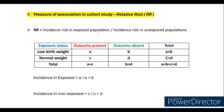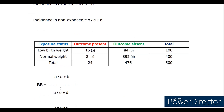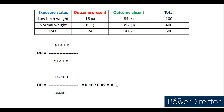Relative risk is the incidence risk in the exposed population divided by the incidence risk in the unexposed population. In formula terms: incidence in exposed = A / (A+B), and incidence in non-exposed = C / (C+D). So RR = [A/(A+B)] / [C/(C+D)]. Substituting our values: 16/100 divided by 8/400, which gives a relative risk of 8.